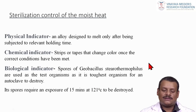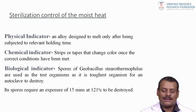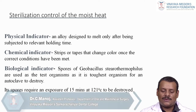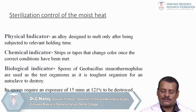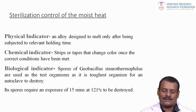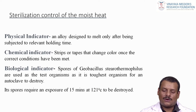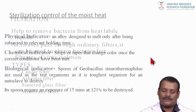Sterilization control of the autoclave is done using indicators. A physical indicator is an alloy designed to melt only after being subjected to the relevant holding time. A chemical indicator consists of strips or tapes that change color once the correct conditions have been met. A biological indicator uses spores of Geobacillus stearothermophilus as the test organism, as it is the toughest organism for an autoclave to destroy, requiring exposure of 15 minutes at 121°C to be destroyed.